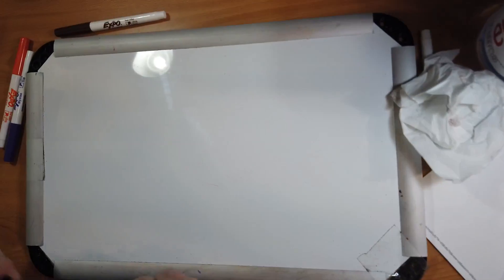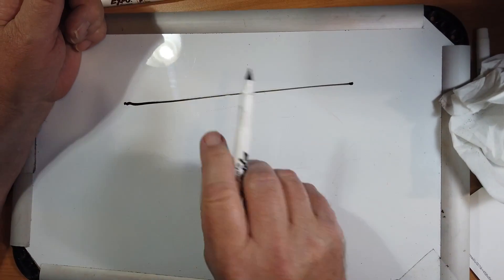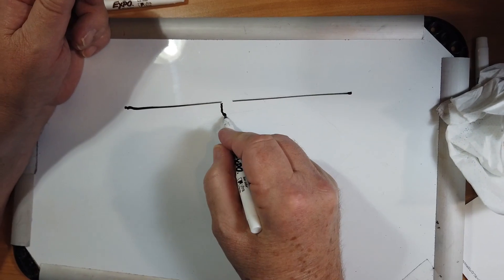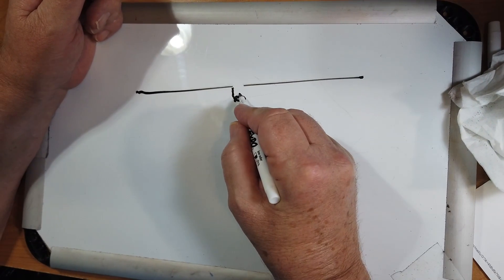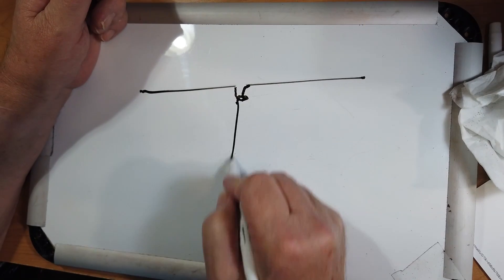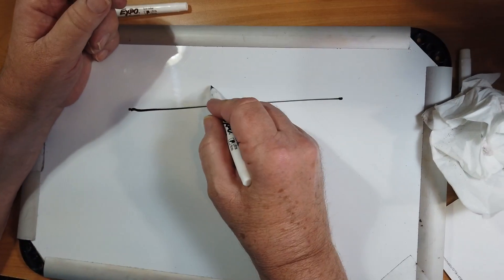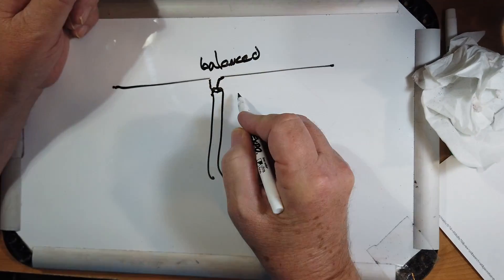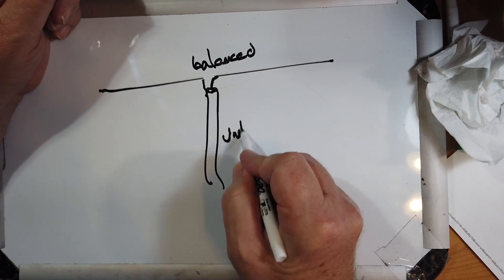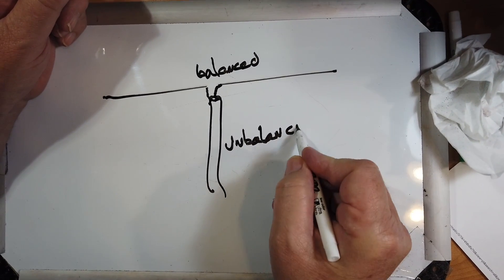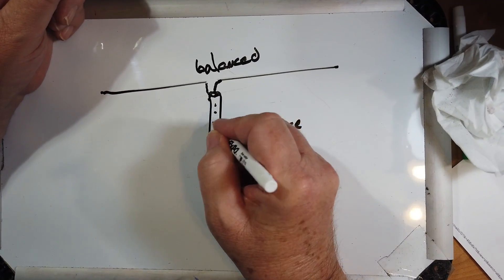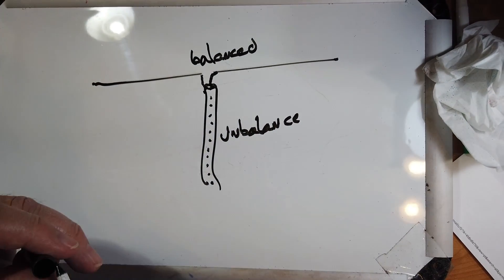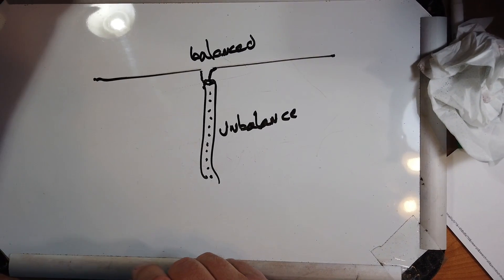First of all, it's easy with the case of coax. This goes to the shield, and then what's inside goes over to here. And then you have the shield coming down here. Note that this is balanced, and this is unbalanced. Though this looks like a two conductor device, it's actually three. And let me show you how that works.